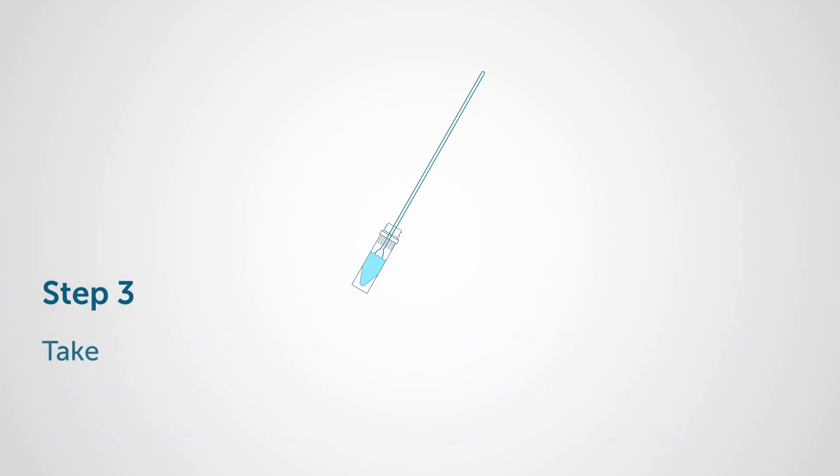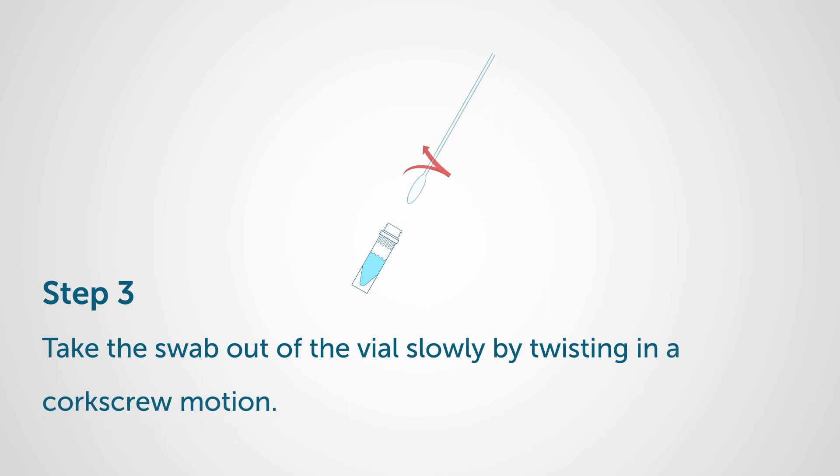Step 3: Take the swab out of the vial slowly by twisting in a corkscrew motion. Then twist the cap on the vial tightly.